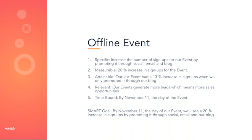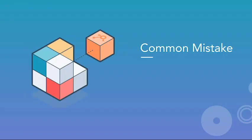So the full goal: 'By November 11th, the day of our event, we will see a 20% increase in sign-ups by promoting through social, email, and blog.' This is a simple example of SMART goals — and yet a lot of agencies and organizations still don't use them. They just say they want an increase in sign-ups without saying by how much, by when, or whether it's attainable. Another mistake is not being proactive once you've set goals — you have to identify progress and establish accountability.